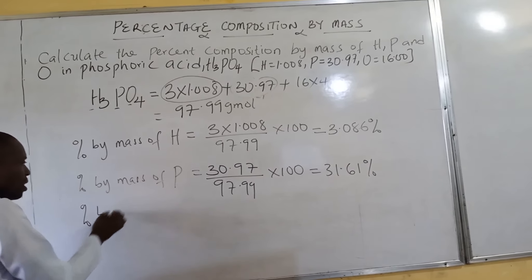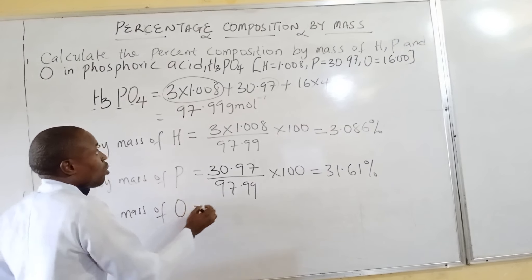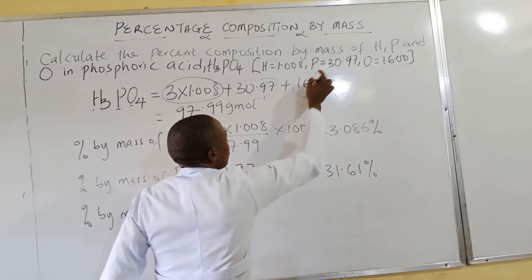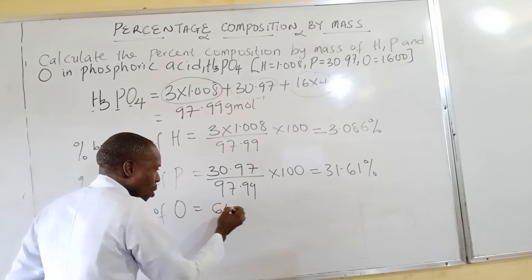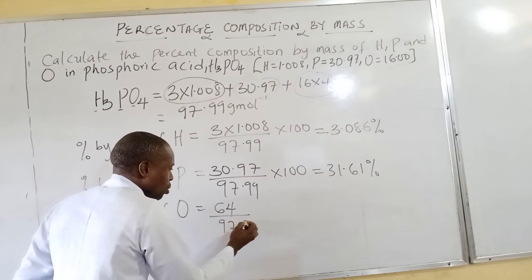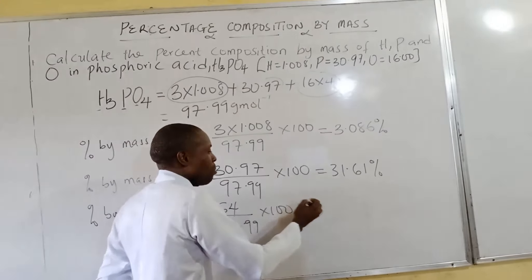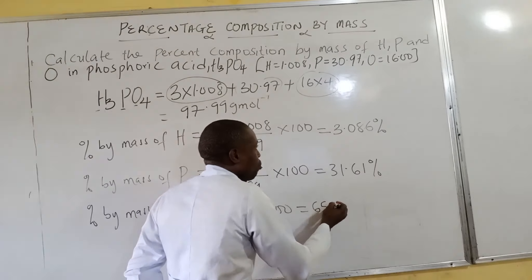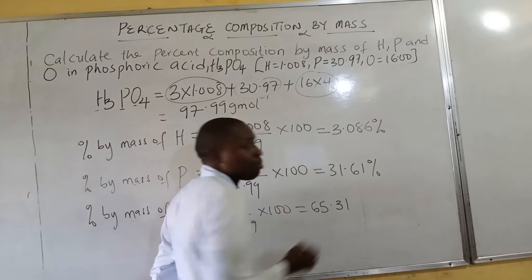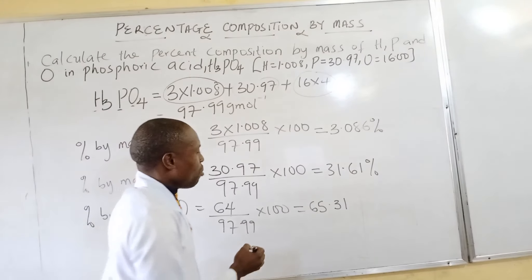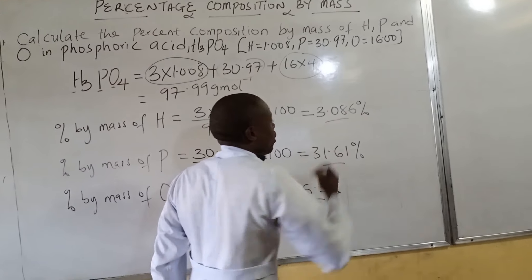The percentage by mass of oxygen is equal to - just picture it here - 16 times 4, which gives me 64. That's 64 over the molar mass, which is 97.99, times 100 percent, which gives me 65.31 percent. That gives me the final answer for oxygen in the compound.